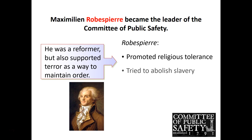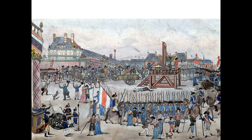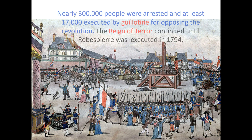In general, Robespierre supported religious tolerance and tried to abolish slavery, but he arrested anyone who threatened or was perceived to threaten the Revolution. During this time — the Reign of Terror — more than 300,000 people were arrested and thrown into prison. At least 17,000 of these people were executed by the guillotine for opposing the Revolution. This period continues until Robespierre himself is caught up in the chaos and executed by the guillotine in 1794.